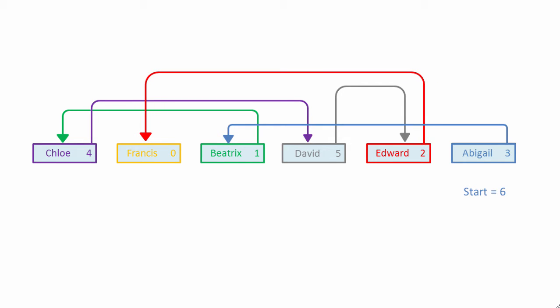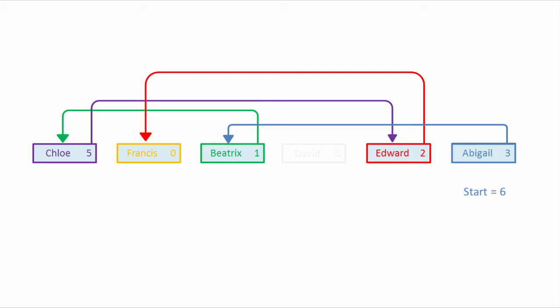So how do we go about removing David from this list? David used to point to item 5, so it's a simple matter of adjusting David's preceding item's pointer to point to item 5. David is still in the data array, but the system of pointers is now bypassing him.